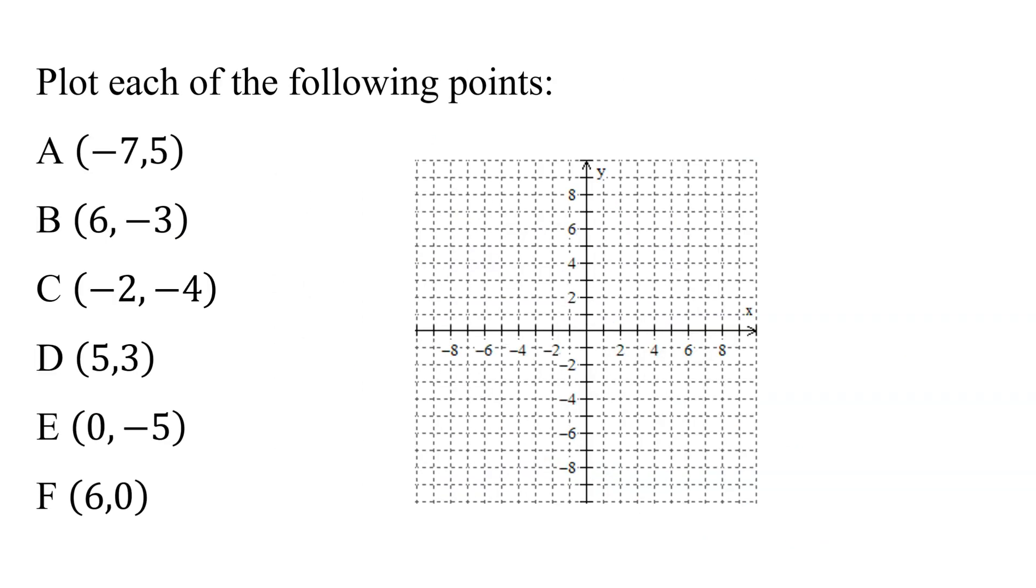Now let's plot some points. I need to plot all of these points. Remember, with ordered pairs, x-coordinate comes first, then the y-coordinate. It's alphabetical. So if I have the point A that has the coordinates negative 7, 5, that means x equals negative 7 and y equals 5.